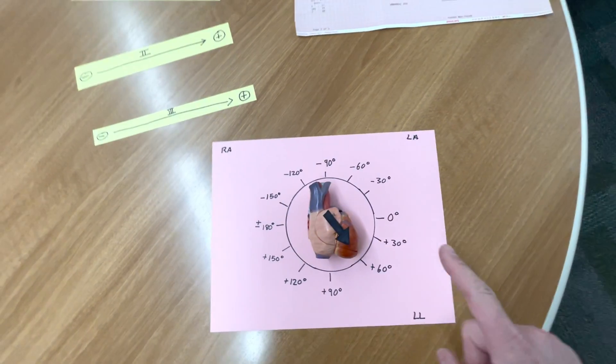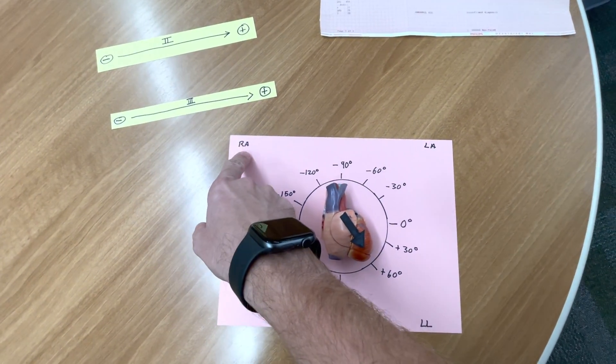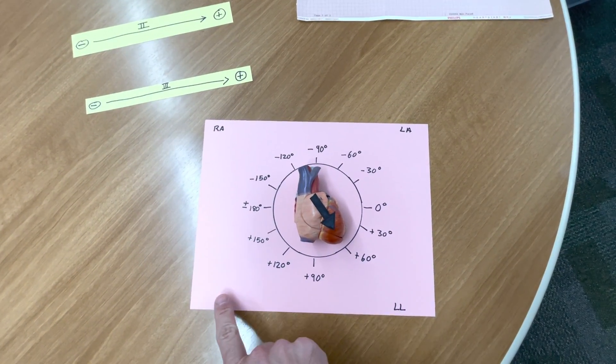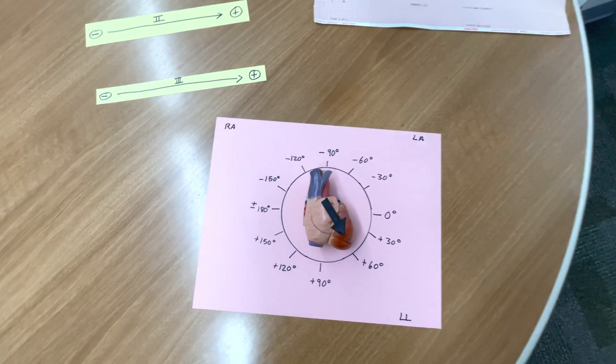The three limb leads more or less make a triangle around the heart known as Einthoven's Triangle. So, I have my electrodes. I have electrodes placed on the patient. The right arm electrode, the left arm electrode, and the left leg electrode. The RL, the right leg, acts as a ground.